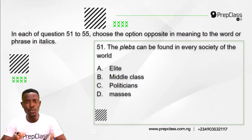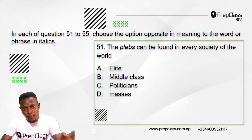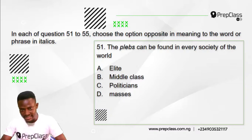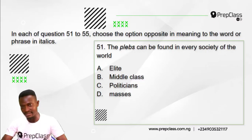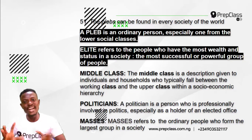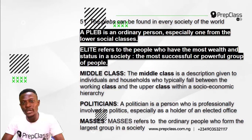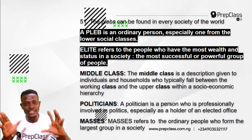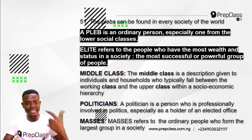We have to select the option opposite in meaning to 'plebs.' Option A: elite. Option B: middle class. Option C: politicians. Option D: masses. Now, a pleb is an ordinary person, especially one from the lower social classes. The opposite meaning to 'pleb' is 'elite.'